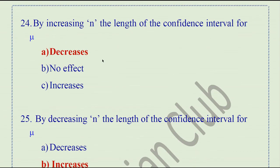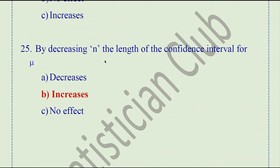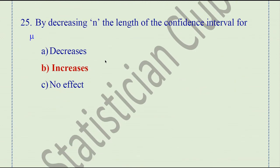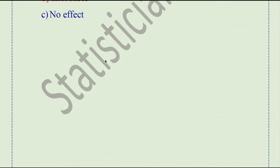By increasing n, the length of the confidence interval for mu decreases. As we increase the sample size, the length of the confidence interval for mu is decreased. By decreasing n, the length of the confidence interval for mu is increased.